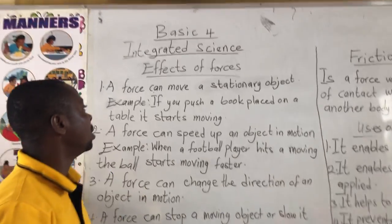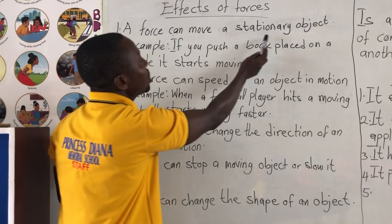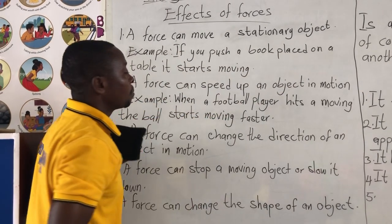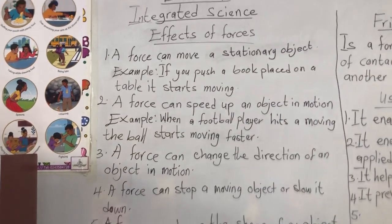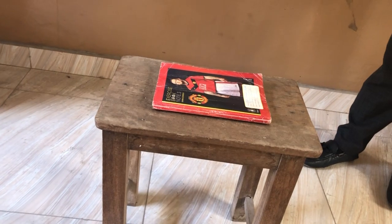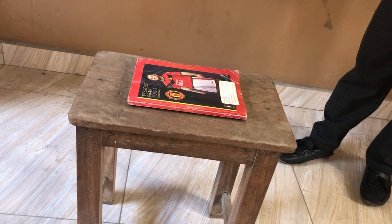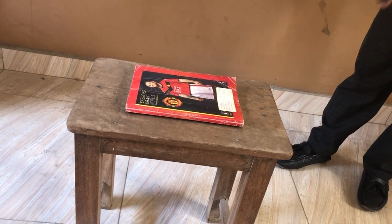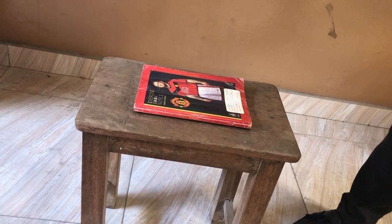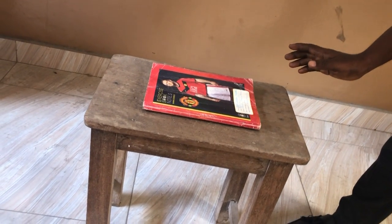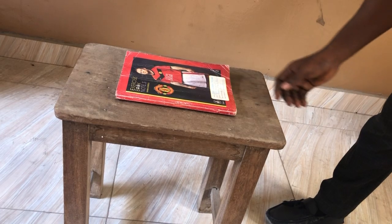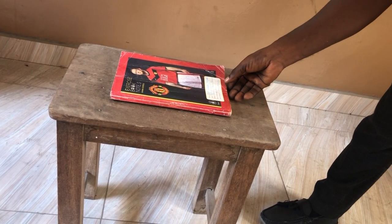Number one: a force can move a stationary object. A force can move a stationary object. Now, this boot is not moving — the table is not moving, so it is a stationary object. Force is a push or pull on a body. So the boot is at one place, it is not moving. I am now going to apply the force — either push it or pull it. Let me push it.